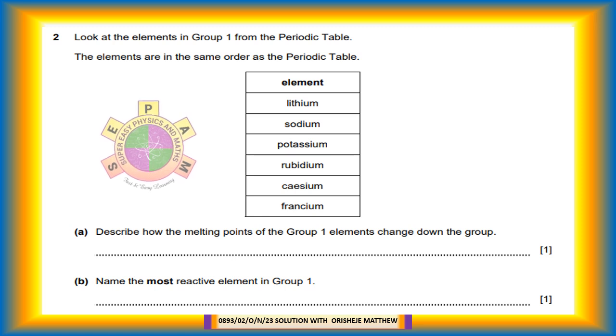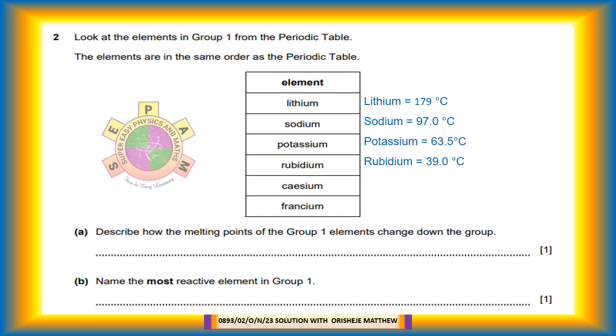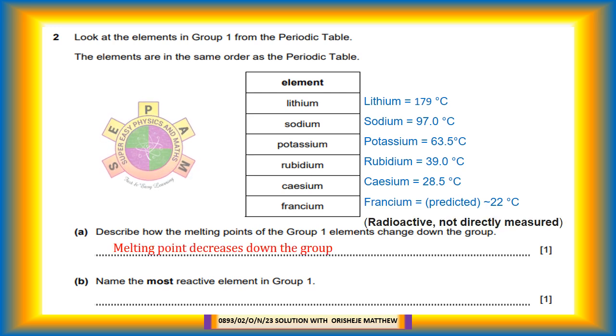Question 2a: Describe how the melting points of the group 1 elements change down the group. The melting points are lithium 179 degrees Celsius, sodium 97 degrees Celsius, potassium 63.5 degrees Celsius, rubidium 39 degrees Celsius, cesium 28.5 degrees Celsius, and francium. The melting point decreases down the group because the metallic bond becomes weaker down the group.